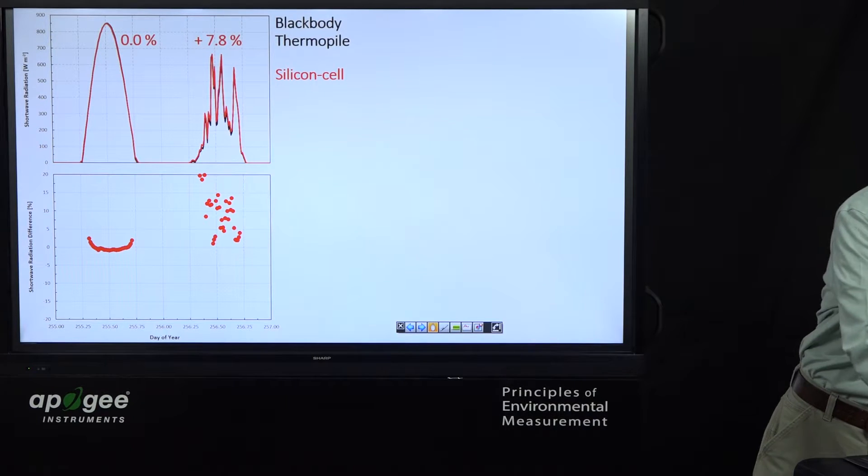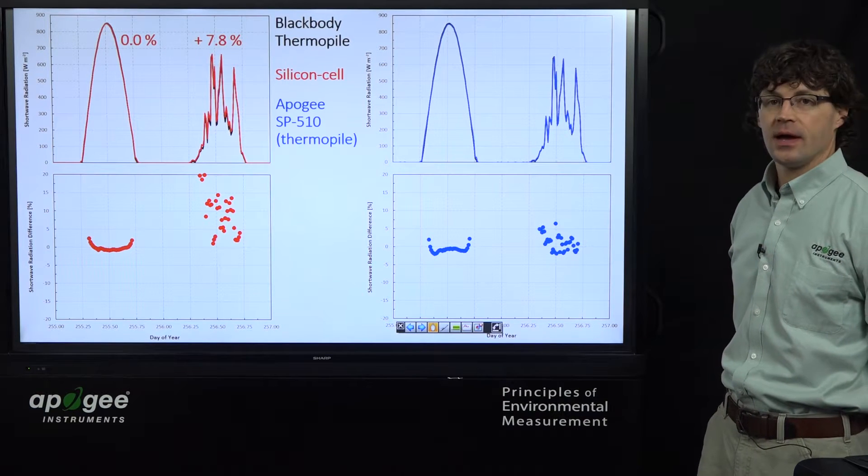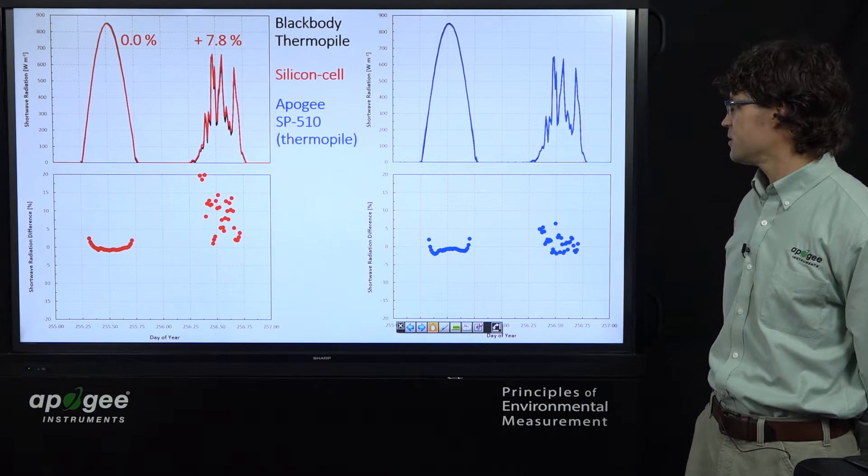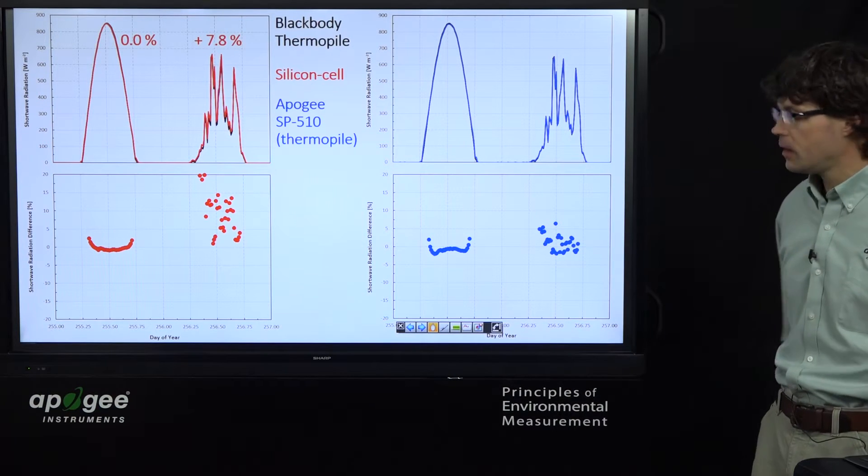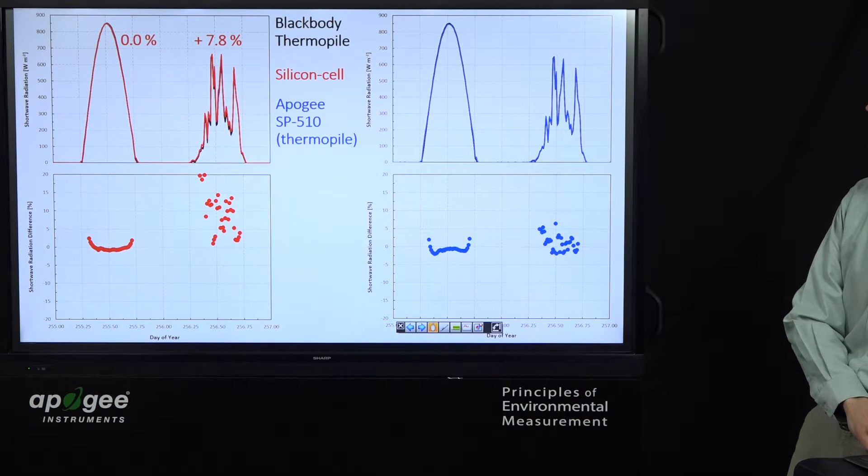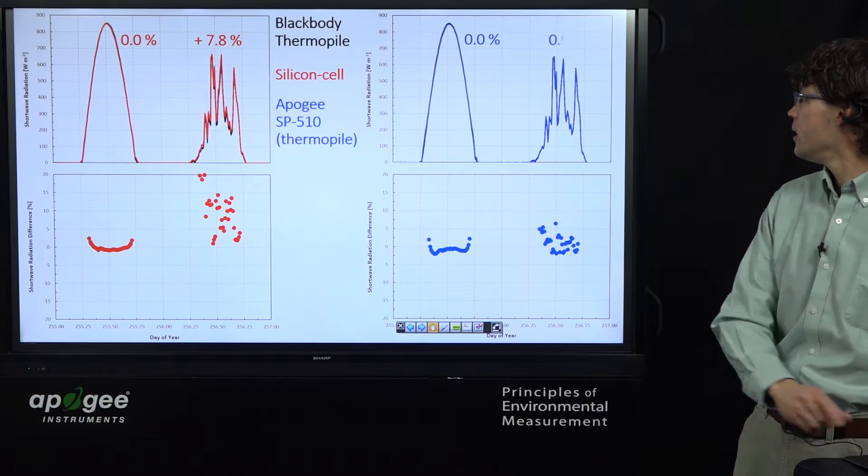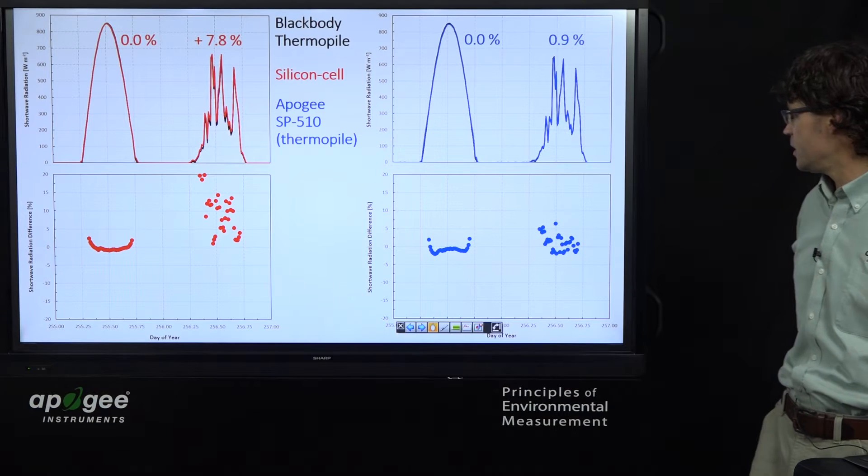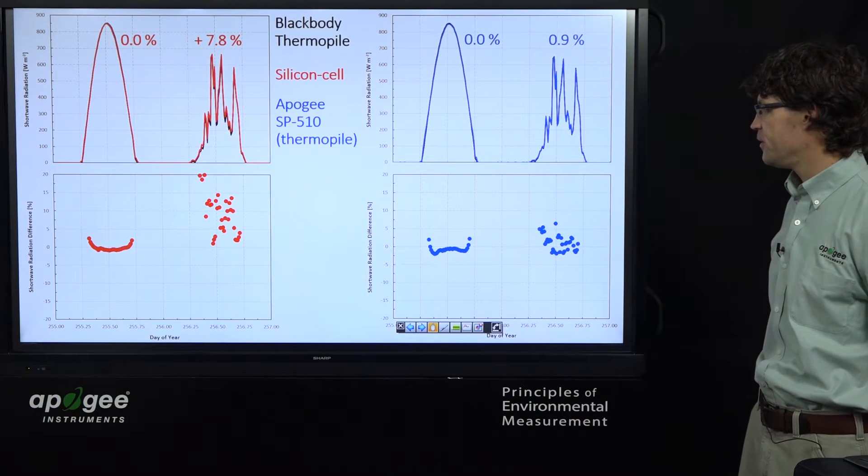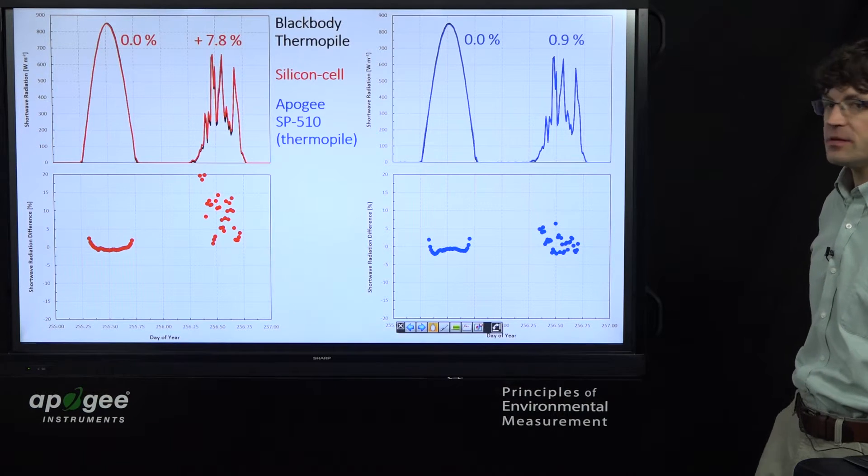To show you how it performs, we actually have data for an Apogee SP510 for the exact same two days that we showed for the silicon-cell. So again, if we compare daily total errors, we get no error on the clear day and minimal error on the cloudy day, only about 1%. And you can see down here that the 15-minute periods, the errors are much smaller for the thermopile sensor.